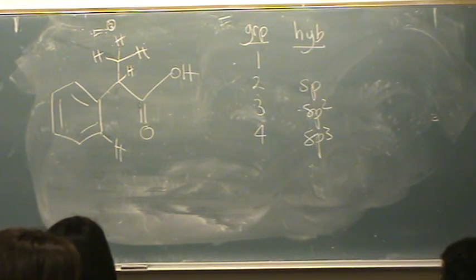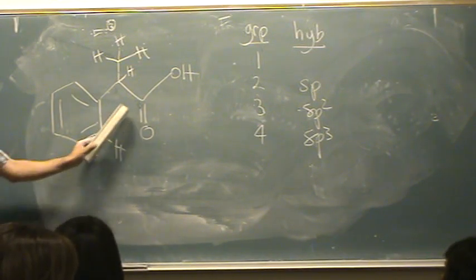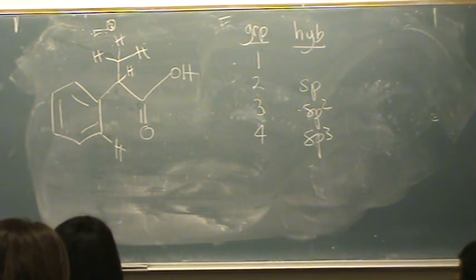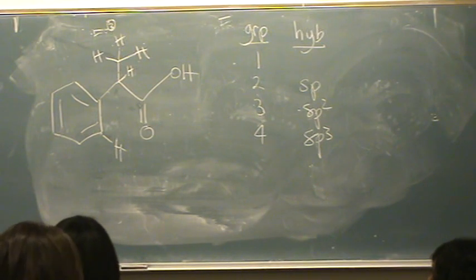Essentially, if it's single bonds, it's got to be sp3. If there is one double bond, like this, then it has to be sp2, or like these. If there's a triple bond, it has to be sp. That's kind of what it comes down to.